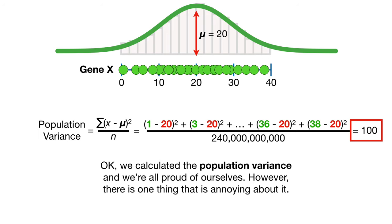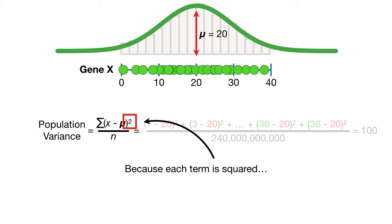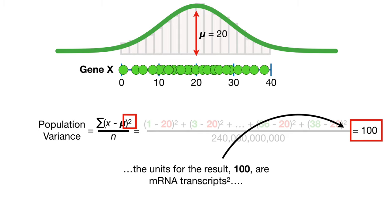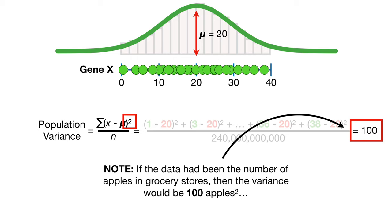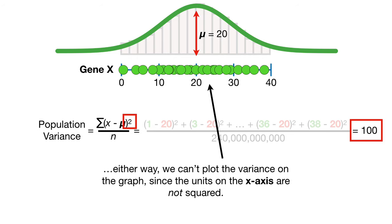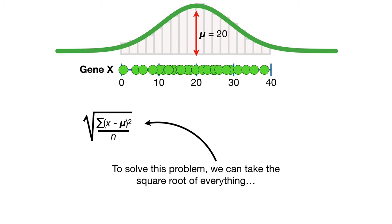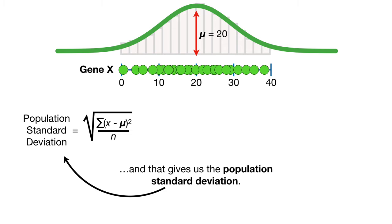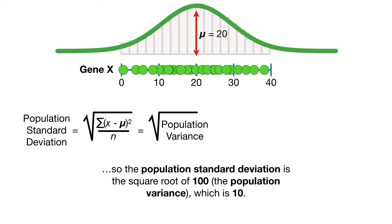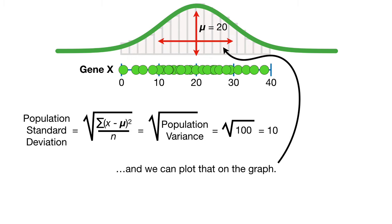Okay, we calculated the population variance and we're all proud of ourselves. However, there is one thing that is annoying about it. Because each term is squared, the units for the result, 100, are mRNA transcripts squared. Note, if the data had been the number of apples in grocery stores, then the variance would be 100 apples squared. Either way, we can't plot the variance on the graph since the units on the x-axis are not squared. To solve this problem, we can take the square root of everything, and that gives us the population standard deviation. So the population standard deviation is the square root of 100, which is 10, and we can plot that on the graph. This shows the mean, 20, plus and minus the standard deviation, 10 mRNA transcripts.